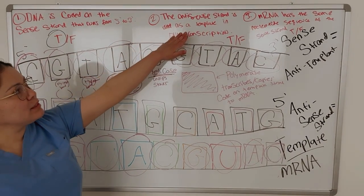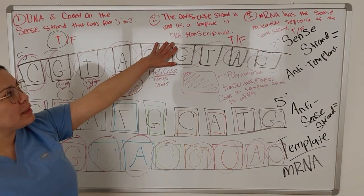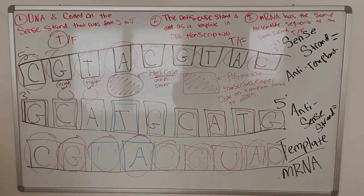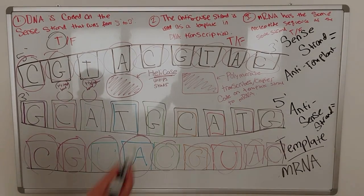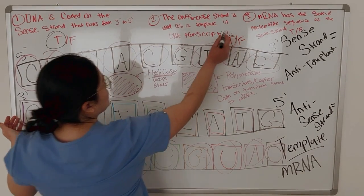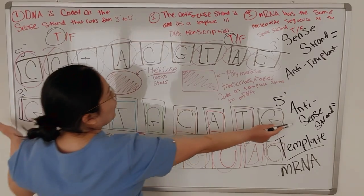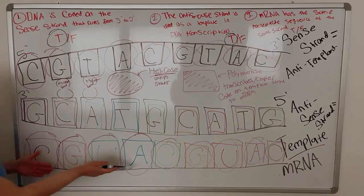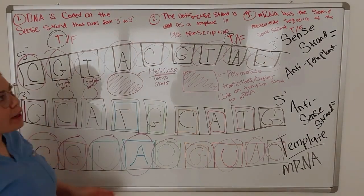Number two, the anti-sense strand is used as a template in DNA transcription. True or false. This is true. So the anti-sense strand right here is used as a template to transcribe mRNA.